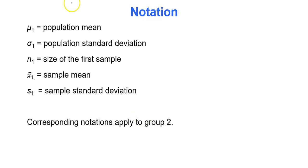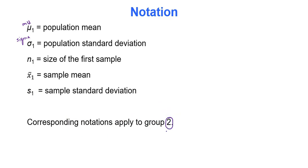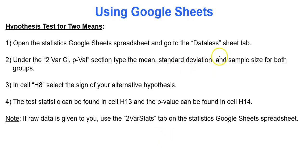The notation you'll see: mu sub 1 is the population mean for group 1. Sigma sub 1 is the population standard deviation for group 1. N sub 1 is the sample size, x-bar sub 1 is the sample mean, and S1 is the sample standard deviation for group 1. Replace all the 1 subscripts with 2s for group 2. To perform these hypothesis tests, we go to Google Sheets to the data list tab, the two-variable confidence interval p-value region, and type in the summary statistics for each sample.